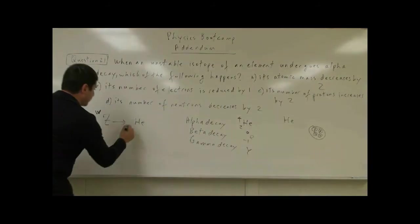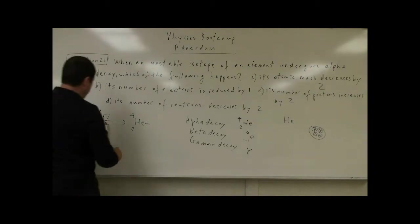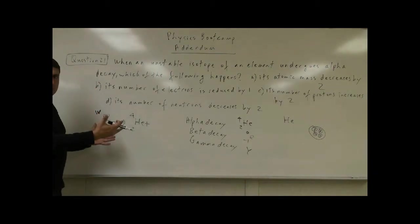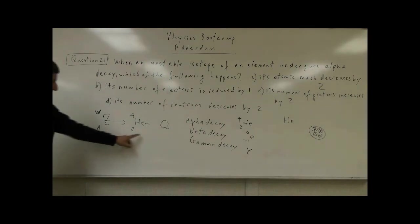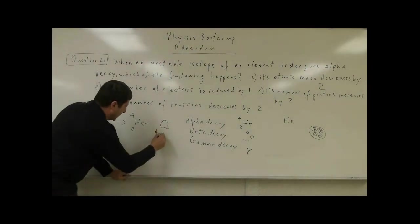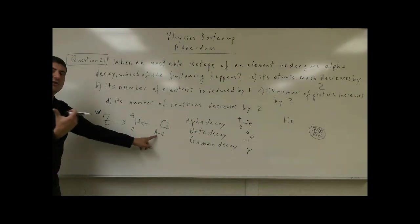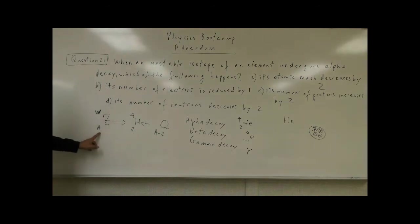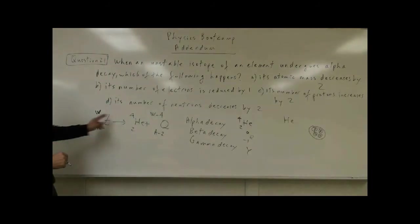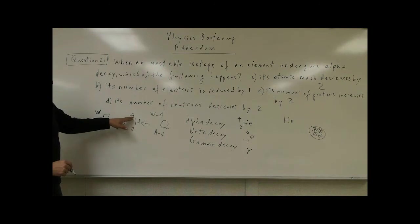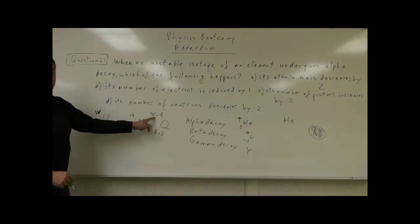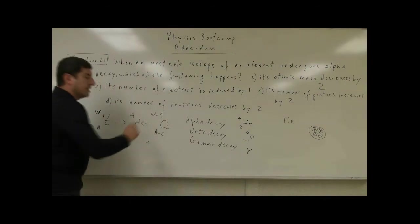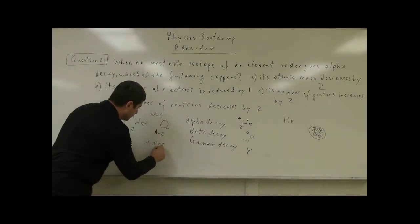We have helium-2-4 released. In order to balance the equation, Z turns into a new element — call it Q. To balance it, the atomic number of Q has to be A minus 2, because (A-2) + 2 gives you A. The atomic weight becomes W minus 4, because (W-4) + 4 gives you W. This conserves both charge and total mass, and as a byproduct the reaction also releases some energy.